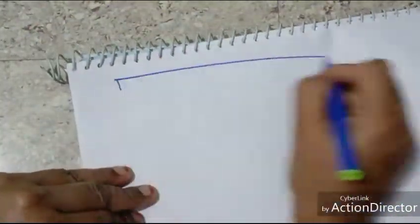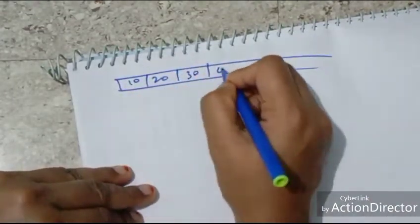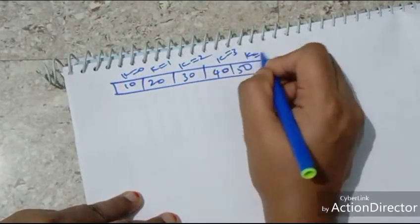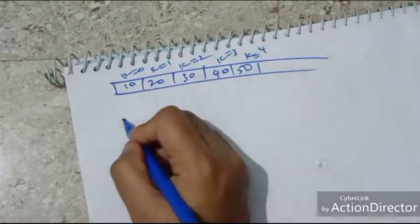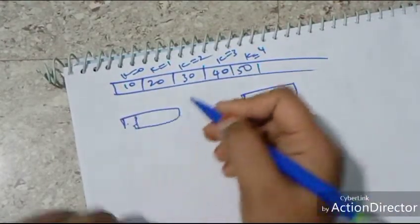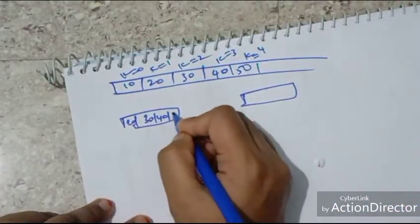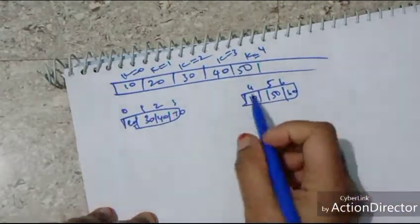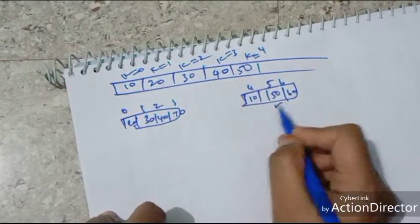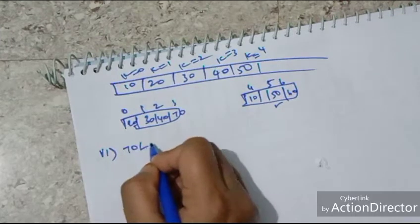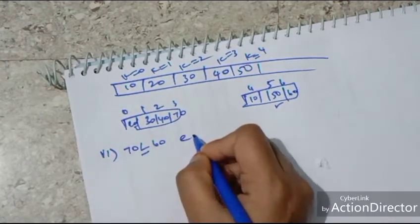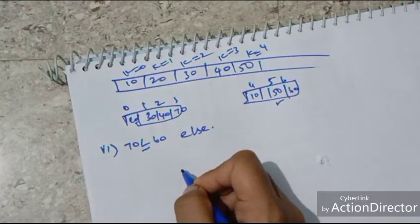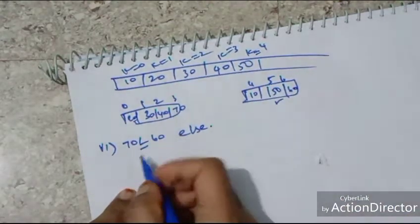So far we have filled: 10, 20, 30, 40, 50 at positions K=0 through K=4. The original array was 20, 30, 40, 70, 10, 50, 60. Now the sixth condition: 70 is lesser than or equal to 60 — it is not, so the else part is executed again.